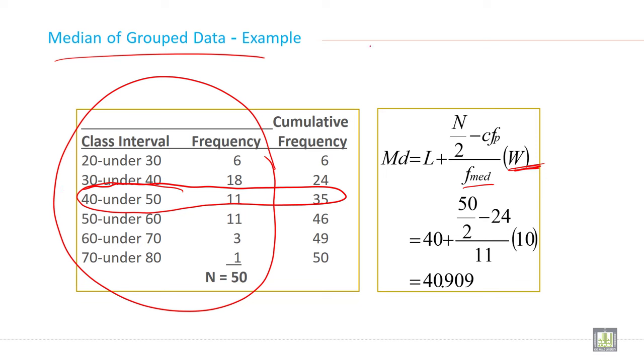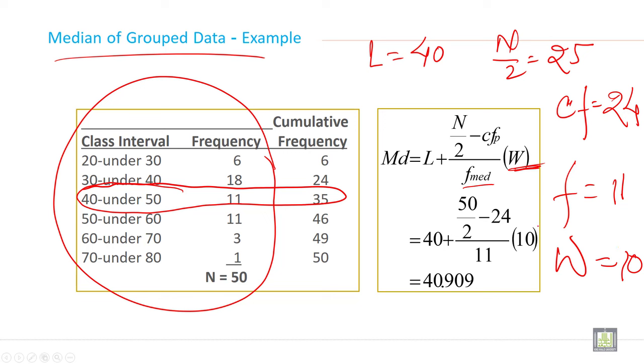So your L becomes L is equal to 40 and N by 2 will be 25 and CF will be how much? CF, your CF will be 24. Pre-median class cumulative frequency and your F will be 11. And W gap as it is here 30 minus 20, all the gap in all classes it is 10.